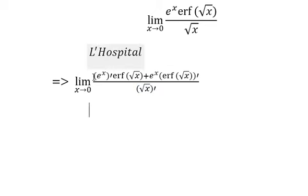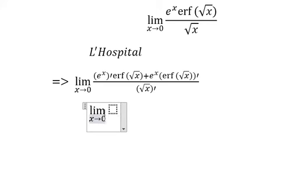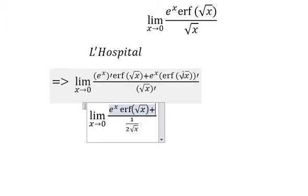So we will do the first derivative of the numerator and denominator. This one is about one over two multiplied by square root of s, this one is still the same one. Because the first derivative of the error function, we will have the square root inside here, so we put one over two square root of s.